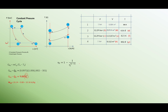To find net work, simply take heat supply minus heat rejected. To find thermal efficiency, you can use the volume ratio formula, or the pressure ratio formula: Rp to the power of (gamma minus 1) over gamma. Alternatively, use net work out divided by heat supply. The thermal efficiency works out to 51.2 percent.